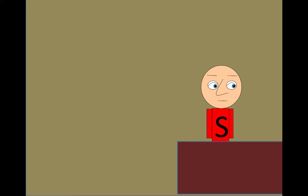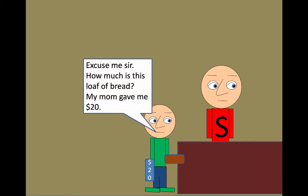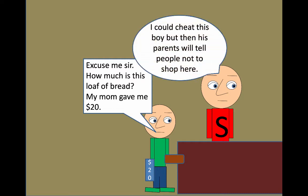Here's a case Kant gives, and he asks you to have a reaction. I'm going to describe a case, and you're supposed to see how you react. So this is a shopkeeper. That's why the sweatshirt says S. Along comes a child, and the child says, excuse me, sir, how much is this loaf of bread? My mom gave me $20 to spend on the bread. And the shopkeeper thinks, I could cheat this boy very easily, but then he's going to tell his parents, and then they won't shop here.